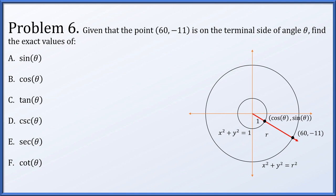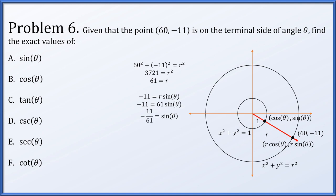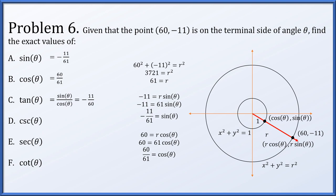On the unit circle, the corresponding point has coordinates (cos θ, sin θ). The larger circle is similar — everything scaled by r. So on the larger circle the point is (r cos θ, r sin θ). With x = 60 and y = −11, we solve 60² + (−11)² = r², giving r = 61. Then sin θ = −11/61 and cos θ = 60/61.